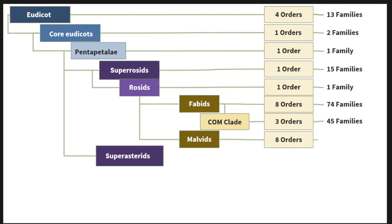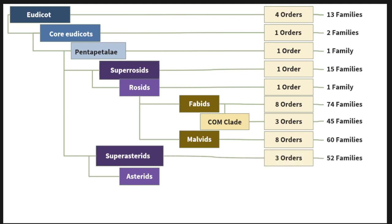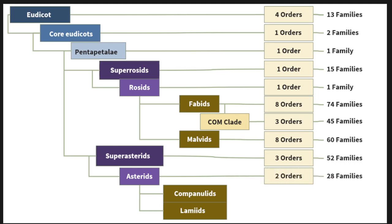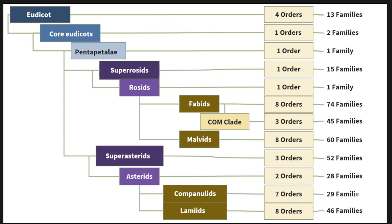The rest of malvids have been classified into eight orders with 60 families. Superasterids have been classified into asterids except three orders comprising 52 families. Asterids have been classified into two subclades: lamids and campanulids, except two orders comprising 28 families. Lamids are with eight orders and 46 families, and campanulids are with seven orders comprising 29 families. This is a very important classification outline of the APG system, and we will now study the orders placed in each clade one by one.